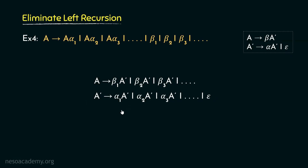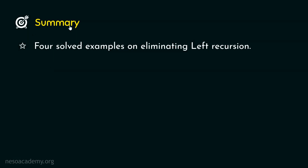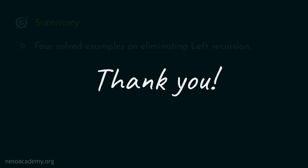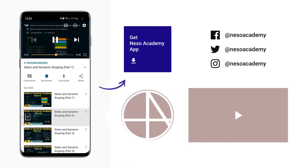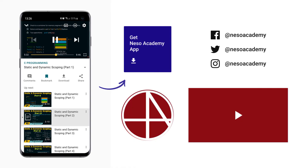This is how we eliminate left recursion. Remember, we need to eliminate left recursion because top-down parsers get confused while dealing with left recursive grammars and basically reject those. In this session, we observed four solved examples on eliminating left recursion. In the next session, we will observe non-deterministic context-free grammars. Thank you all for watching.